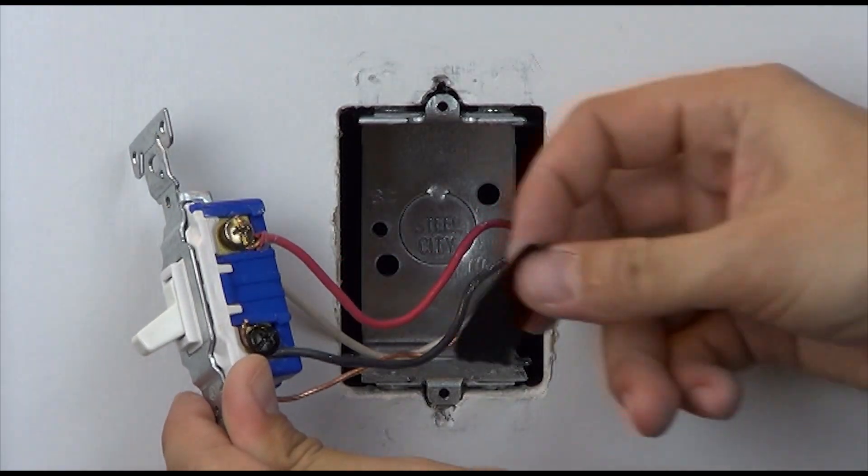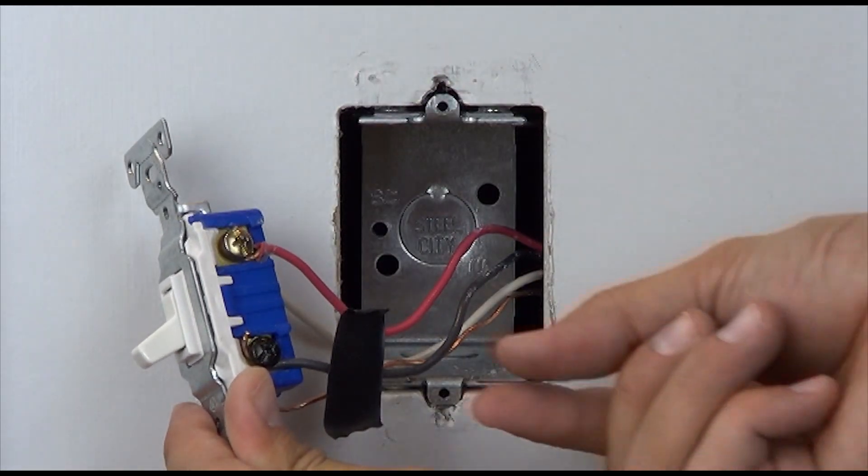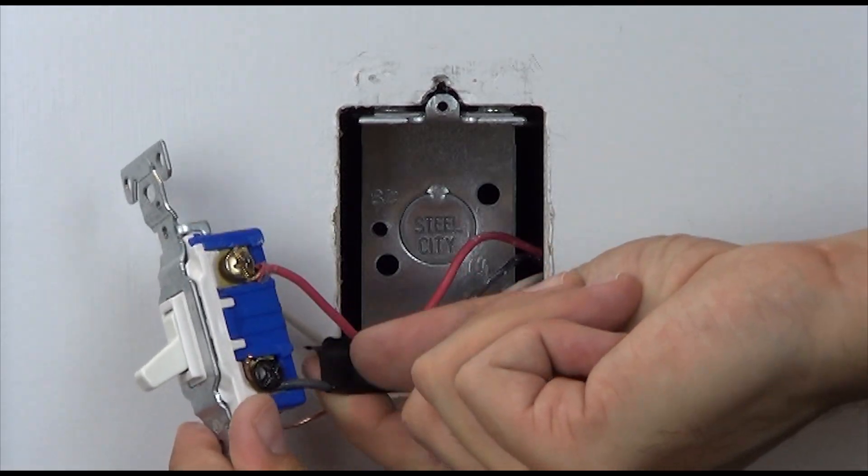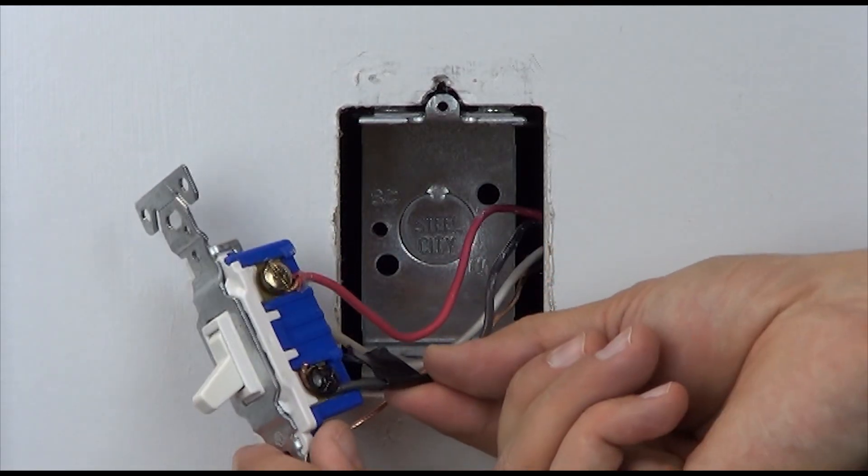Before disconnecting, we will want to use a piece of electrical tape to tag the wire that is connected to the different colored screw, similar to the first location.